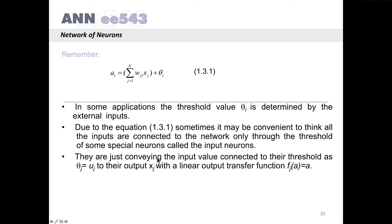Input neurons are just conveying the input value connected to their threshold — theta-j equals uj — to their output xj, with a linear output transfer function fj. For neuron j, the function applied on the activation is just equal to the activation of that neuron. So whatever the activation for the input neuron, which equals theta-j, is given directly as the output.